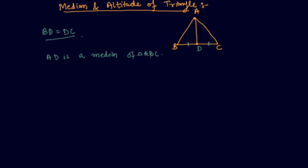So this is median AD. I can draw another median from vertex B to side AC. Let's say this point is E, and if AE equals EC, then BE is also a median.